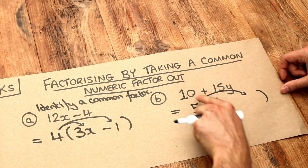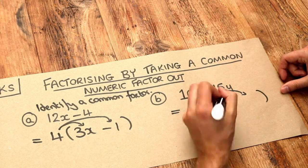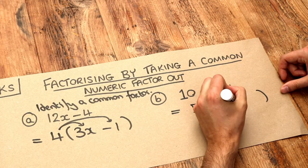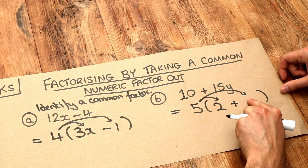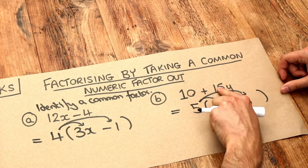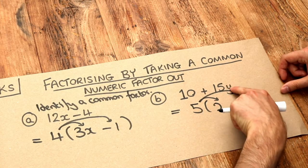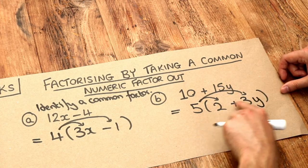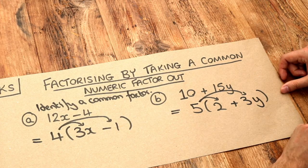So 5 times what would give you 10? Well, it's 2. Then let's copy this symbol, we get a plus in the middle. 5 times what is 15y? Well, 5 times 3 gives you the 15. And then also we need this y here. So we're going to have to put that y there so that 5 times 3y indeed is 15y.